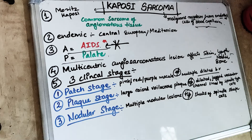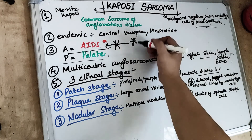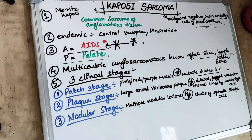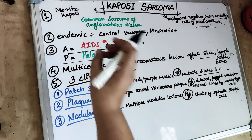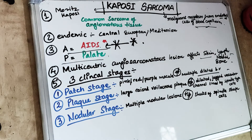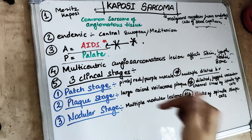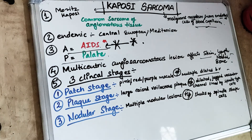There are multiple nodular lesions in the nodular stage. So this is about Kaposi Sarcoma. Always remember this is associated with AIDS — it is frequently seen in patients with AIDS. Kaposi Sarcoma was first reported by Moritz Kaposi in 1872. I hope you have enjoyed the video. There is a link in the description box to support on Patreon as well as PayPal to make free videos and free notes for you.